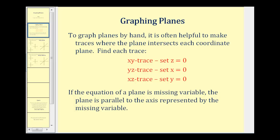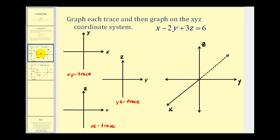Let's take a look at a couple of examples. We could just go ahead and plot the intercepts on the three-dimensional coordinate system, but since we will be graphing quadric surfaces very soon, I wanted to introduce this technique now because we'll use it again for quadric surfaces. So to determine the xy trace, or where this plane would intersect the xy coordinate plane, we're going to set z equal to zero, and that'll form the line x minus two y equals six.